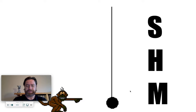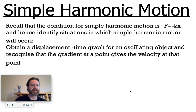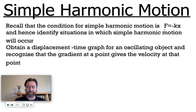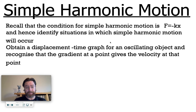Welcome to simple harmonic motion — the motion of objects that oscillate back and forth. The lesson objectives are two things: first, looking at the condition and definition of simple harmonic motion, which can be summed up with the equation F = -kx. This should be familiar because it looks a lot like Hooke's Law and is closely related to it. We also want to be able to identify whether oscillating motion is simple harmonic or something else.